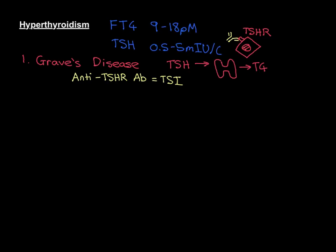In Graves' disease, you're going to end up with massive production of thyroxine and therefore hyperthyroidism. You're also going to end up with a goitre in most cases. Remember from the previous video, when TSH binds to the receptor continuously for a long period of time, it triggers the thyroid gland to get bigger and form a goitre. The same thing happens here — the anti-TSH receptor antibody also triggers hyperplasia of the thyroid gland, so you end up with a goitre as well.